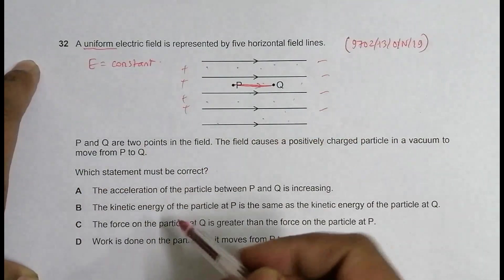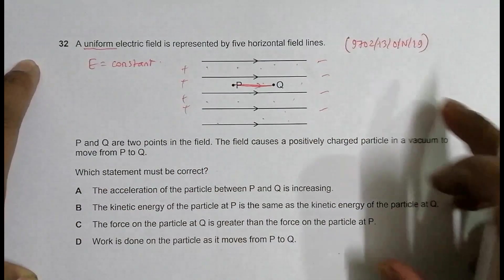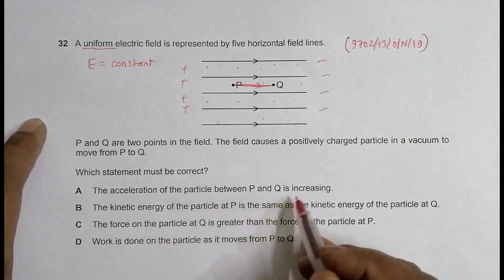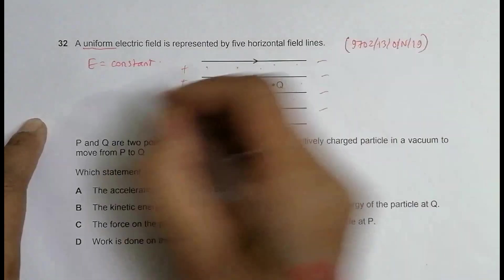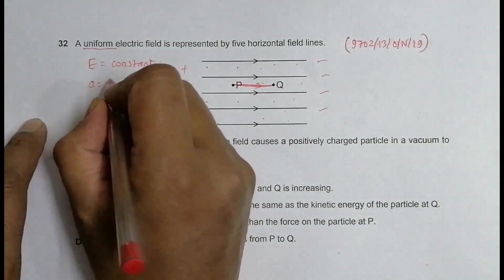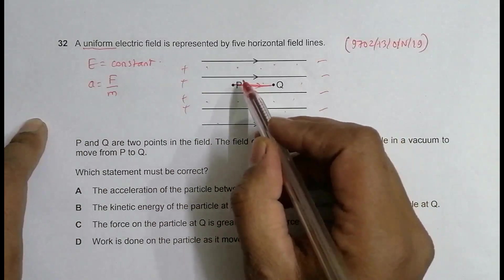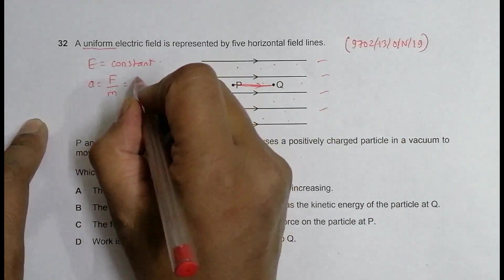Which statement must be correct? The first is that the acceleration of the particle between P and Q is increasing. Let's see. The value of a should be equal to F by M, the ratio of force experienced by the mass of the particle, and the value of force will be equal to QE.